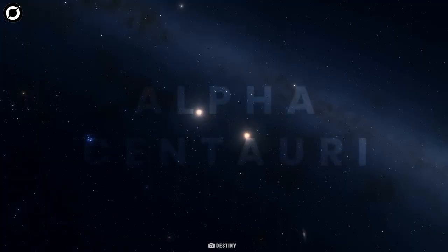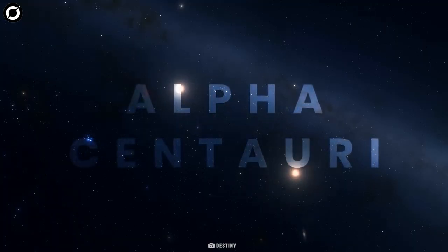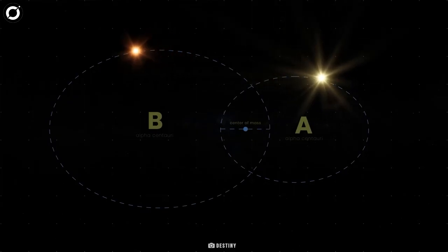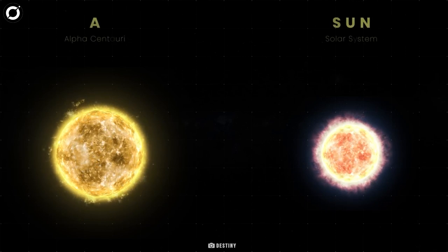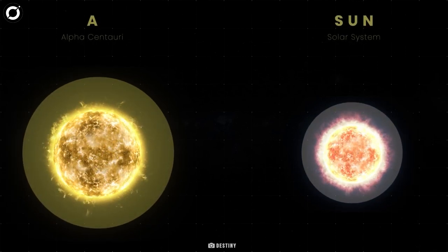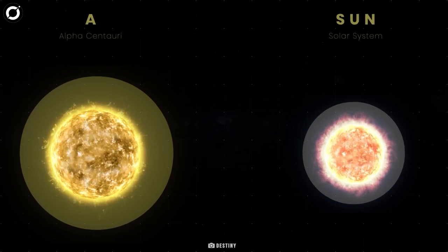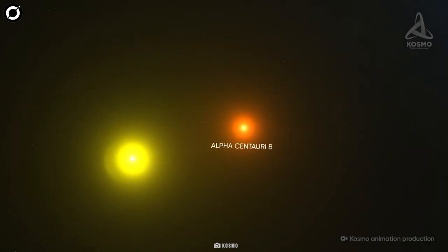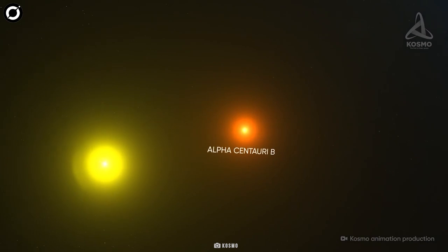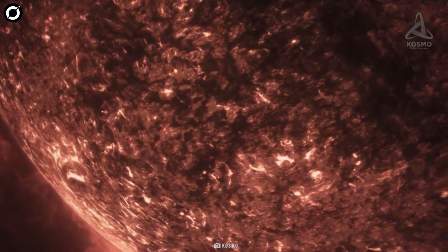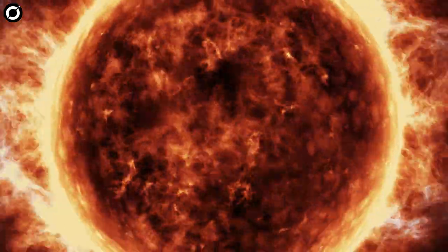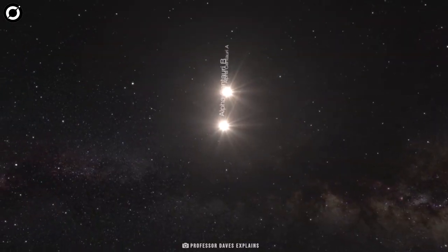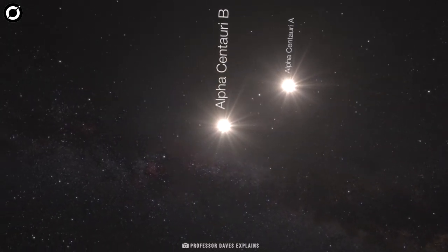The system consists of the binary pair Alpha Centauri A and B, and Alpha Centauri C, or Proxima Centauri. The two stellar companions are relatively close to each other and quite similar to the Sun. Alpha Centauri A shines with yellow light and is 1.5 times brighter than the Sun, while Alpha Centauri B is half as bright with an orange hue. Our Sun fits exactly between them in size. The pair is older than the Sun, with an age of 5 billion years.